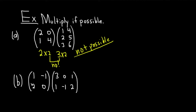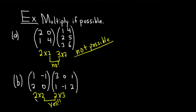Part B: we have a product of matrices again. The first matrix has entries 1, negative 1, 2, 0. The second matrix has entries 3, 0, 1 and 1, negative 1, 2. The first matrix is a 2 by 2 — two rows and two columns. The second matrix is 2 rows and three columns, so it's a 2 by 3. The inside numbers both match — they're both twos — so yes, we can multiply. The resulting matrix is going to have dimensions equal to the outside numbers, so it'll be a 2 by 3. Let's do the multiplication right away.